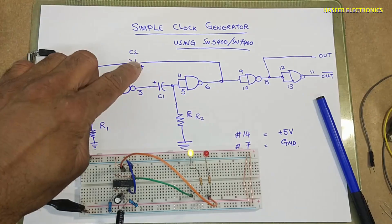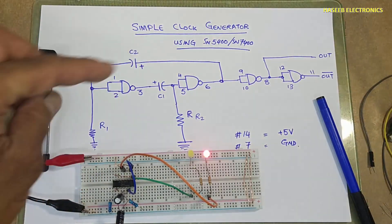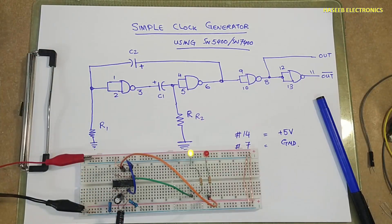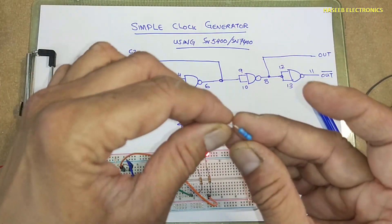If you will decrease the capacitor size the frequency will increase. If you will increase the resistor size the frequency will decrease. If I will use 4.7 kilo ohm resistor...